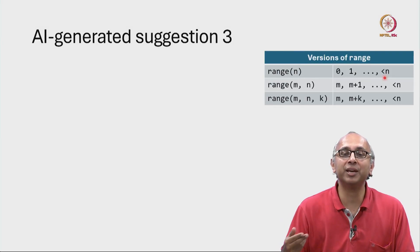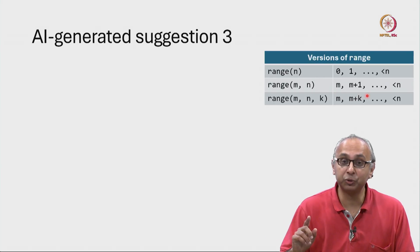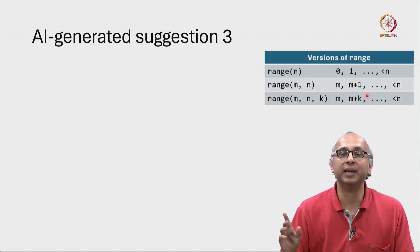Now there are two other ways in which you can call the range function. If you call it with two arguments, m and n, then it will give you the values m, m plus 1, m plus 2, all the way up to but not including n.